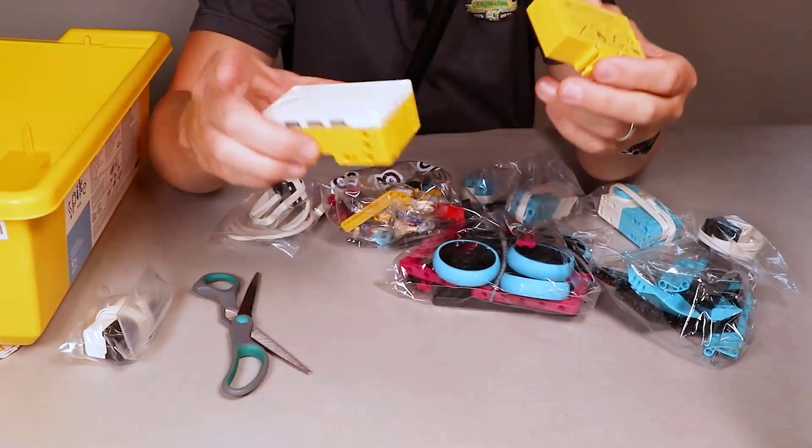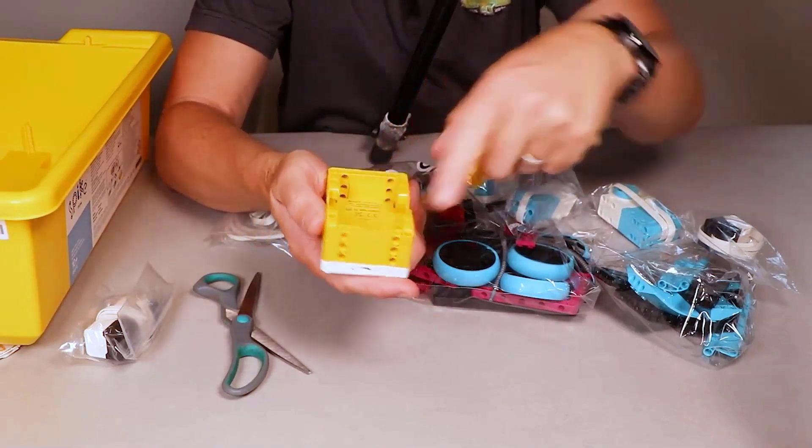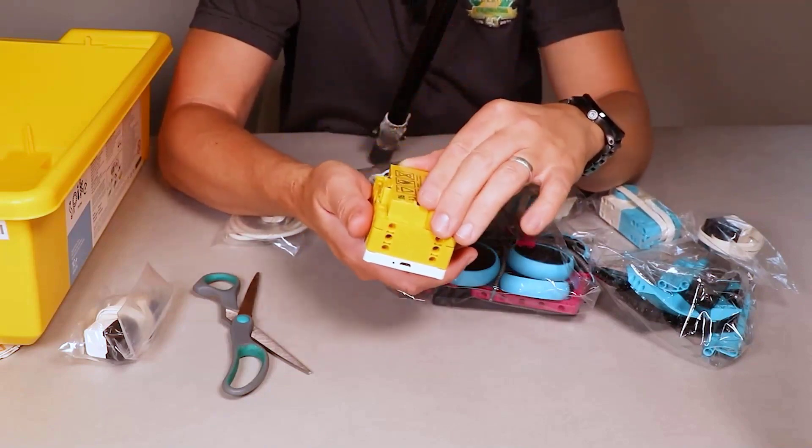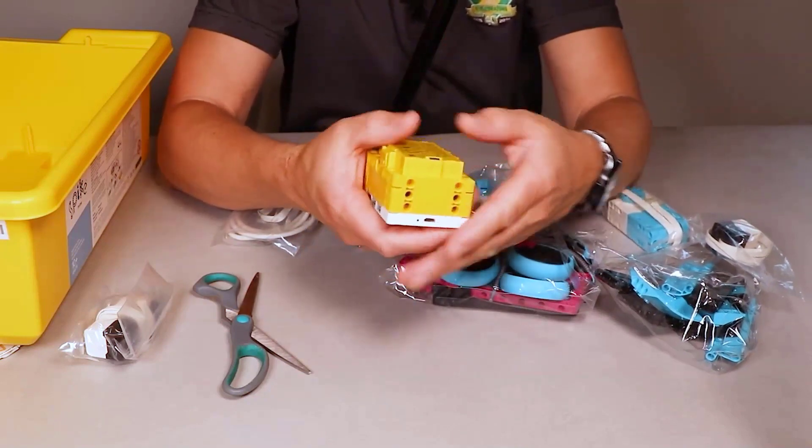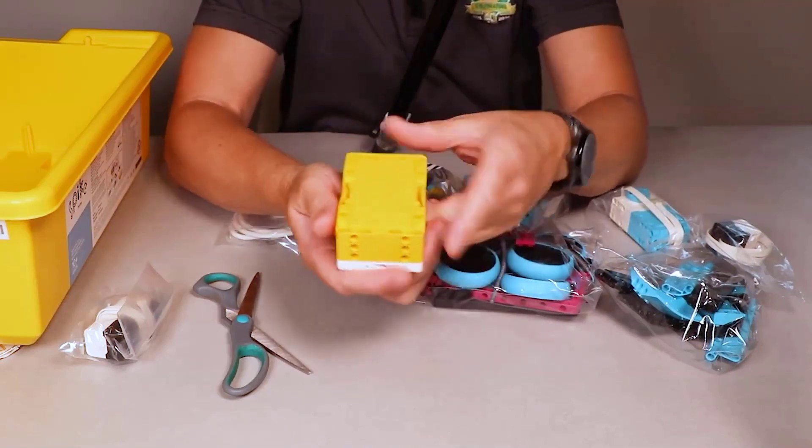This battery holds a really good charge. We have kids using our robotics kits really from 8 in the morning until 5 at night, almost on a daily basis. We can go a couple days before we have to charge it. You're going to want to line up your rechargeable battery and go ahead and place it inside of your hub.